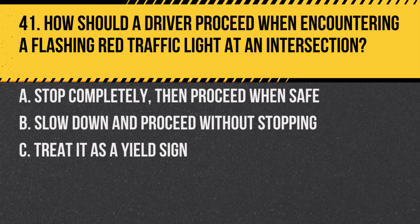Question 41. How should a driver proceed when encountering a flashing red traffic light at an intersection? A. Stop completely, then proceed when safe. B. Slow down and proceed without stopping. C. Treat it as a yield sign. Answer: A. Stop completely, then proceed when safe. A flashing red light is treated like a stop sign.